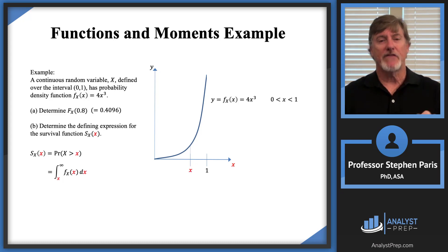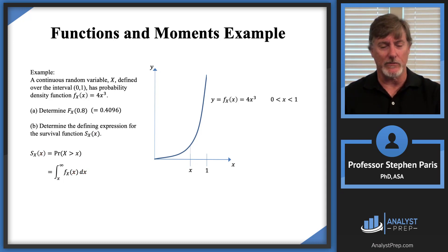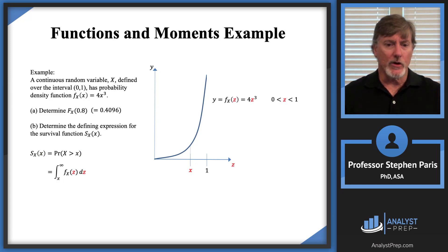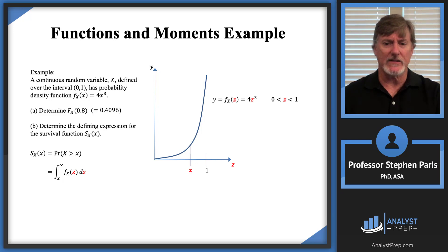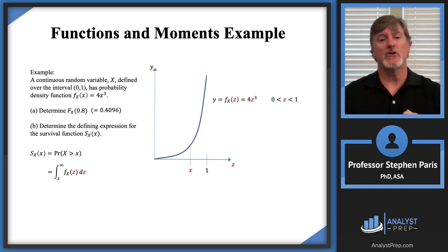So I'm going to change the variable of integration from x to z. There are two ways of correcting this: one is to change the limit of integration from x to z, or you can leave the limit of integration as x and change the variable of integration to z. I think that's the easier approach here because the question asks for a defining expression for the survival function, and I want to keep x as the limit of integration.